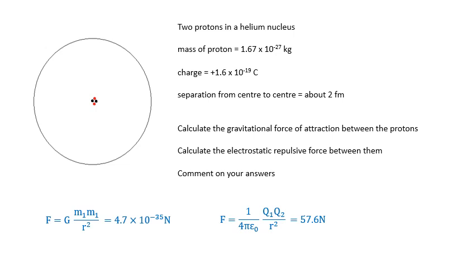So, the gravitational force of attraction is tiny, tiny, tiny. 4.7 times 10 to the minus 35 newtons. The repulsive force is about 57 newtons. It is massive. In general, electrostatic forces are much, much bigger than gravitational forces. Which is why Coulomb had a much easier job than Cavendish did.